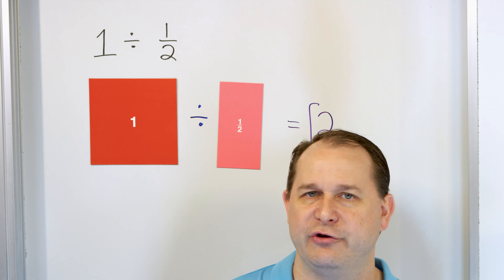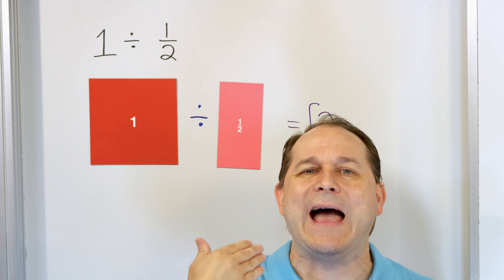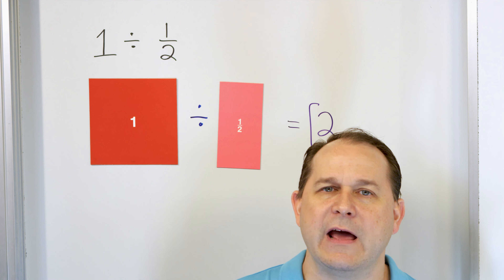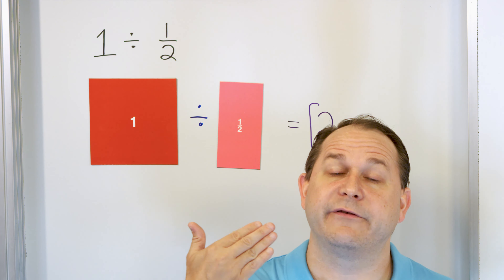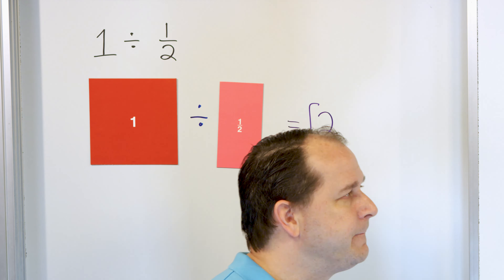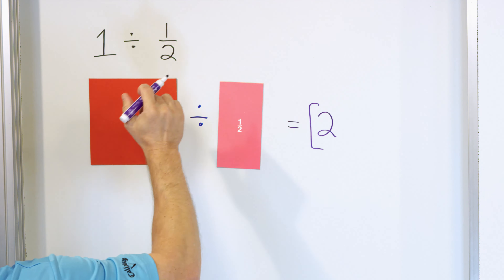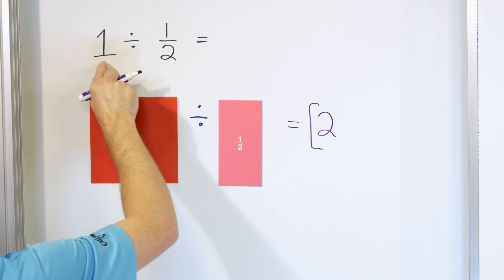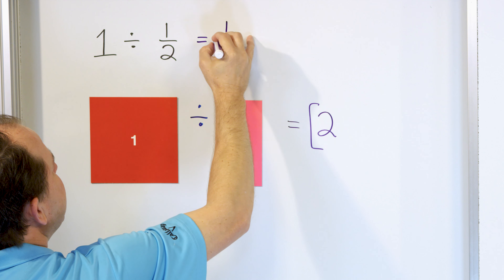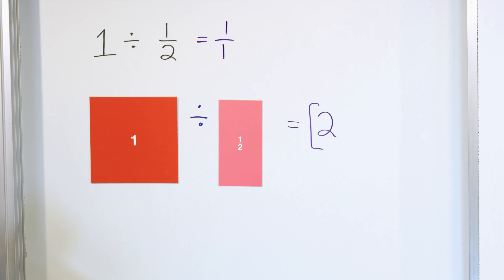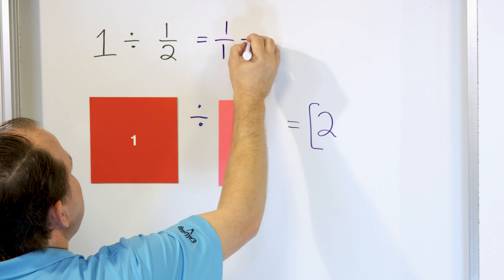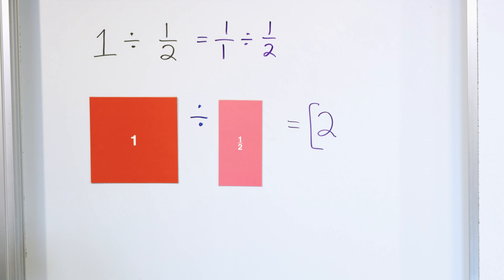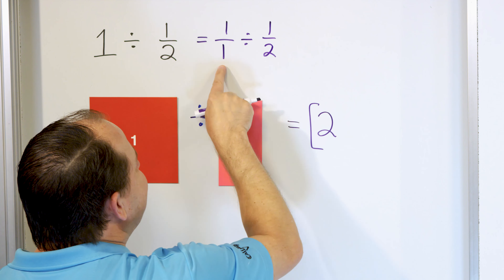In pictures, that's what we're doing. But let's teach you how to divide these things without actually having to use pictures. What we're going to do is rewrite the 1 as a fraction — 1 over 1 — because every time we divide fractions, we're going to write both things as a fraction, and we're going to divide this by 1/2. We have changed nothing; we just turned this into 1 over 1.